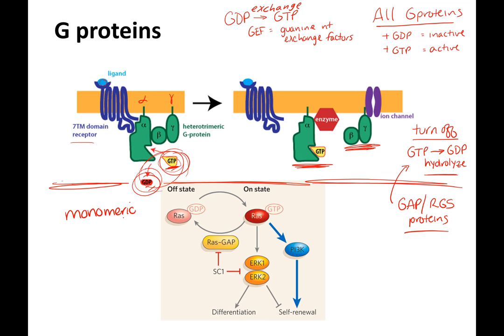The monomeric G protein we're going to worry about is RAS. It is a GDP-GTP binding protein. You have a guanine exchange factor called SOS for RAS. SOS exchanges GDP for GTP, making RAS active. All the downstream arrows show what it can act on, and hopefully you can see all those Ks — these are all kinases.